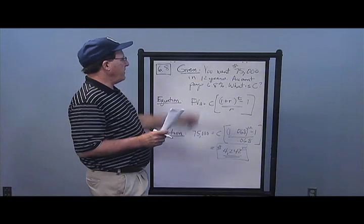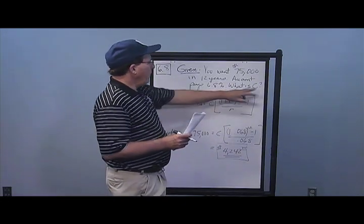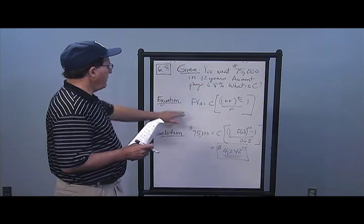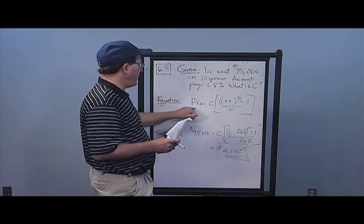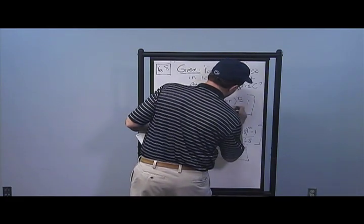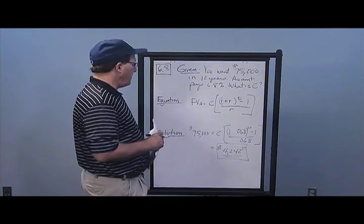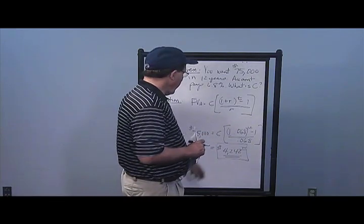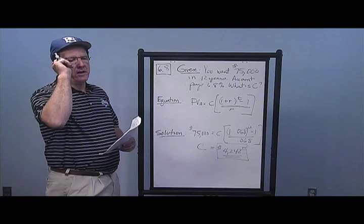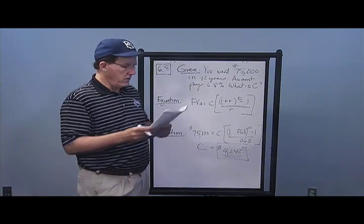In Problem 8, you want $75,000 in your bank account in 12 years. Your account pays 6.8% interest compounded annually — no need to do the EAR. What constant annual deposit must you make? Future value of annuity equals C times ((1 + R) to the T minus 1), all over R. $75,000 is the future value, R is 6.8%, T is 12. I get an annual amount C of $4,242.25. That compounded at 6.8% for 12 years gives $75,000.